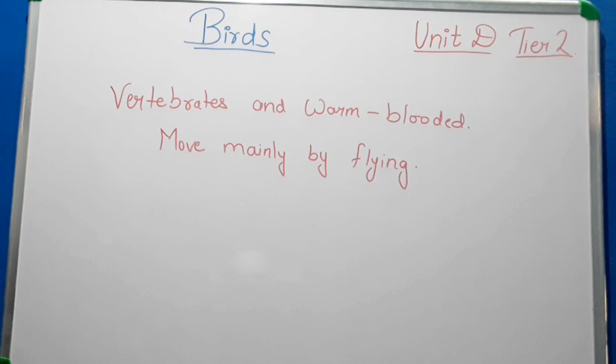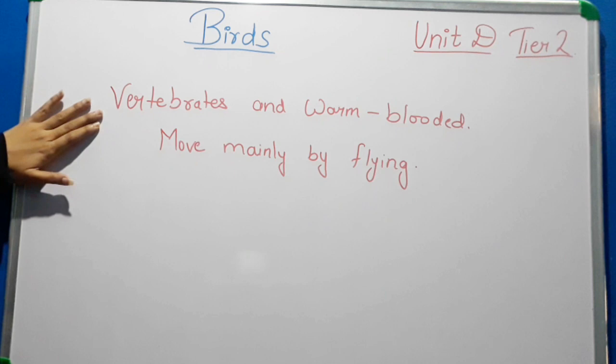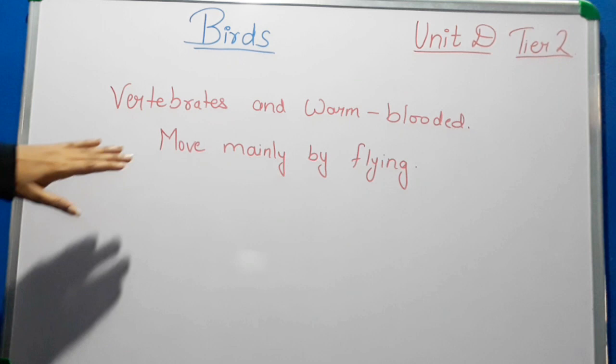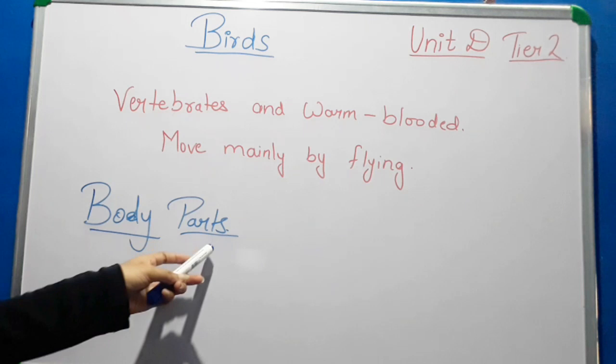Birds are vertebrates and warm-blooded animals. Vertebrates means those who have backbones. Birds are a part of vertebrates, they are warm-blooded animals, and they move mainly by flying.